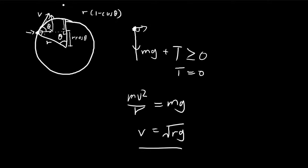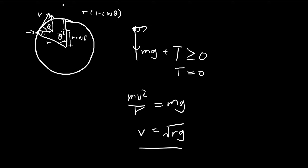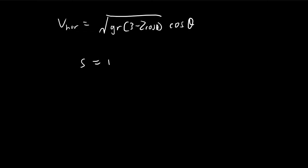Our condition is that the maximum height is reached right above the center of the circle. This means the horizontal distance traveled must equal R sine theta. The horizontal velocity is v times cosine theta, and since there is no horizontal deceleration, horizontal distance equals horizontal velocity times time. Setting this equal to R sine theta gives us our constraint equation.